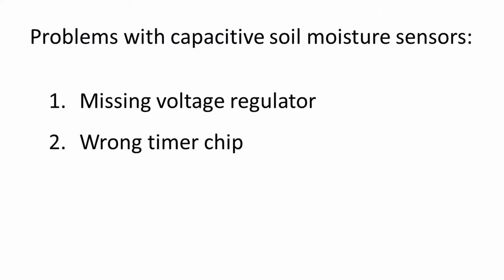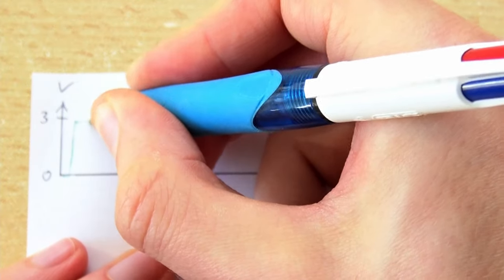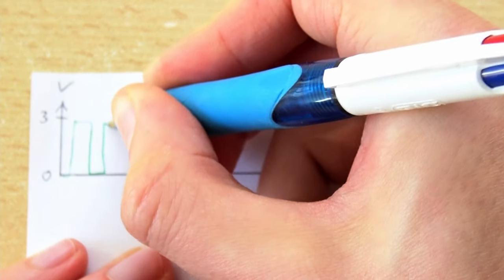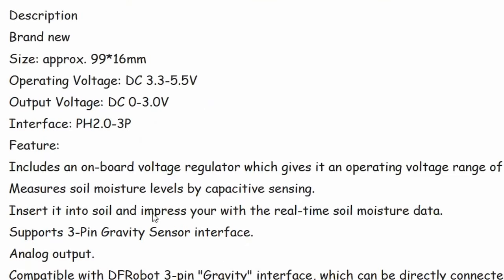Issue 2: Wrong timer chip. As I explained earlier, every capacitive soil moisture sensor uses some sort of timer chip to create an electrical square wave. Unfortunately, not every type of timer chip used is suitable for operation on a 3.3V power supply, although this suitability is almost always mentioned in the product description.